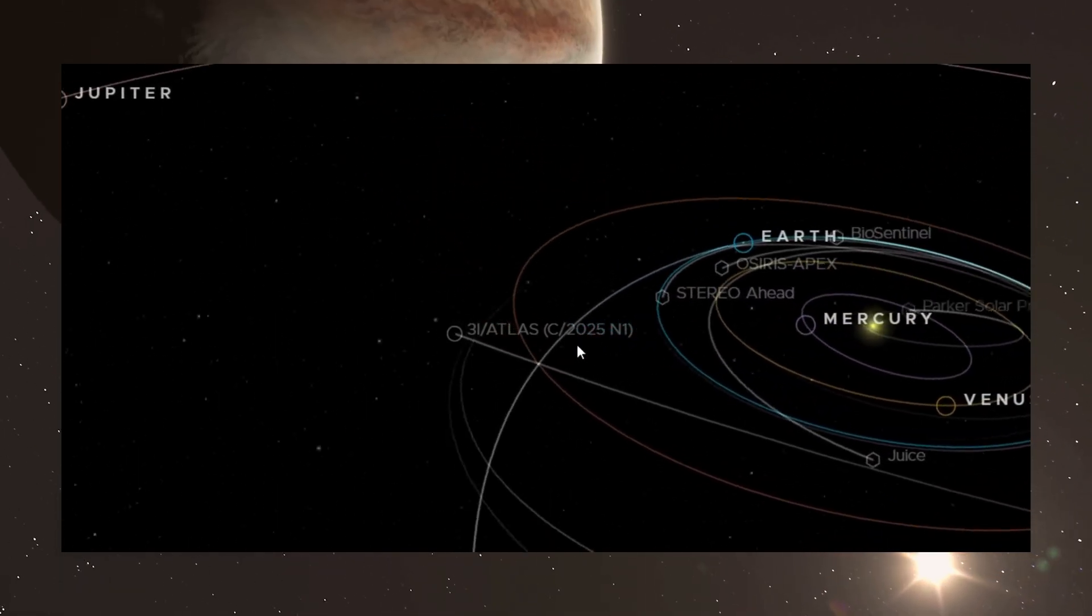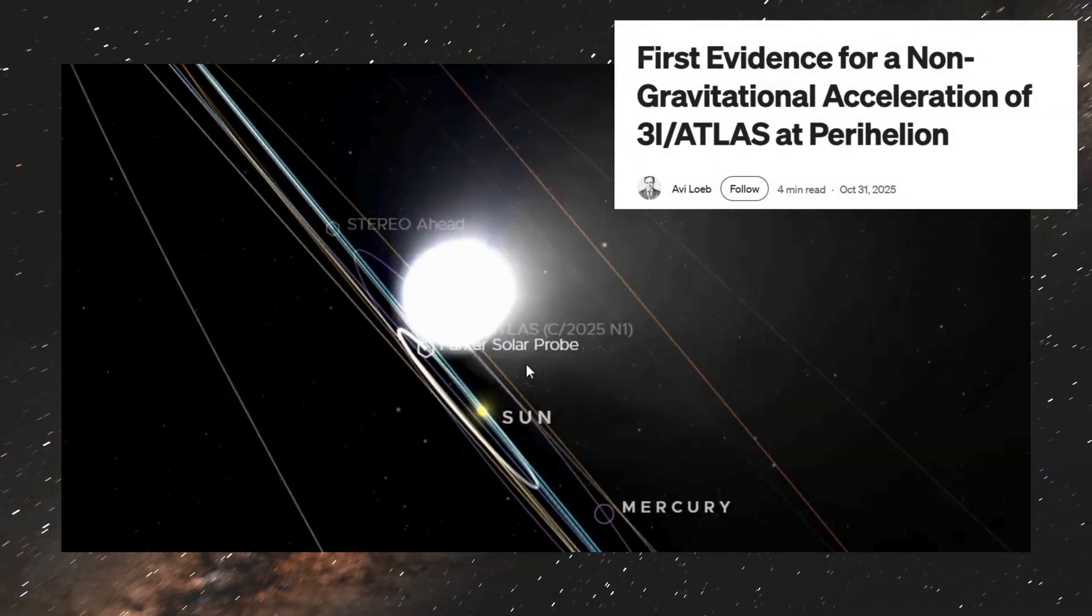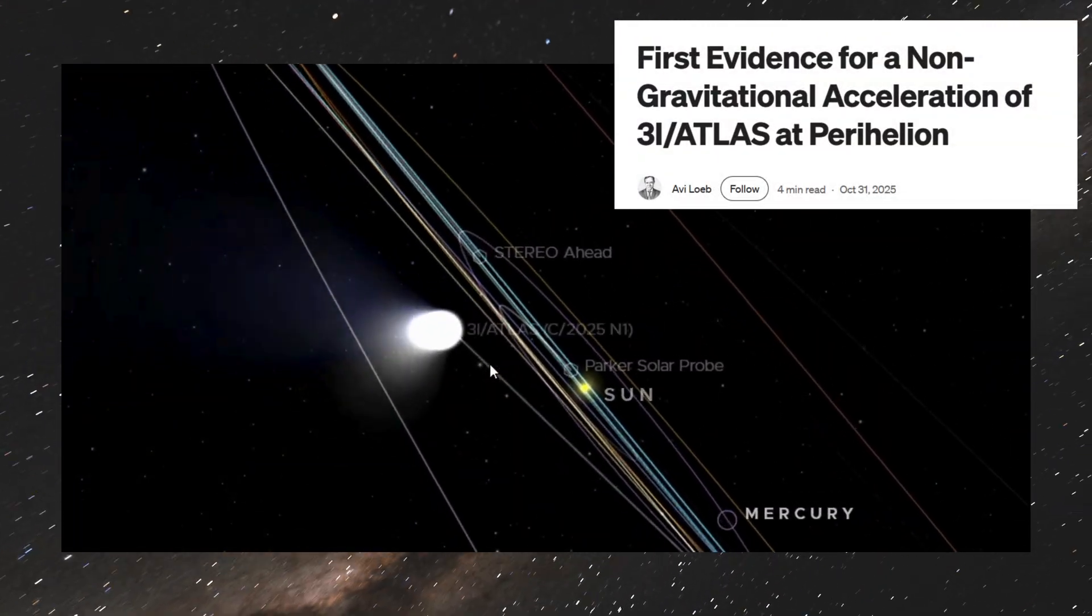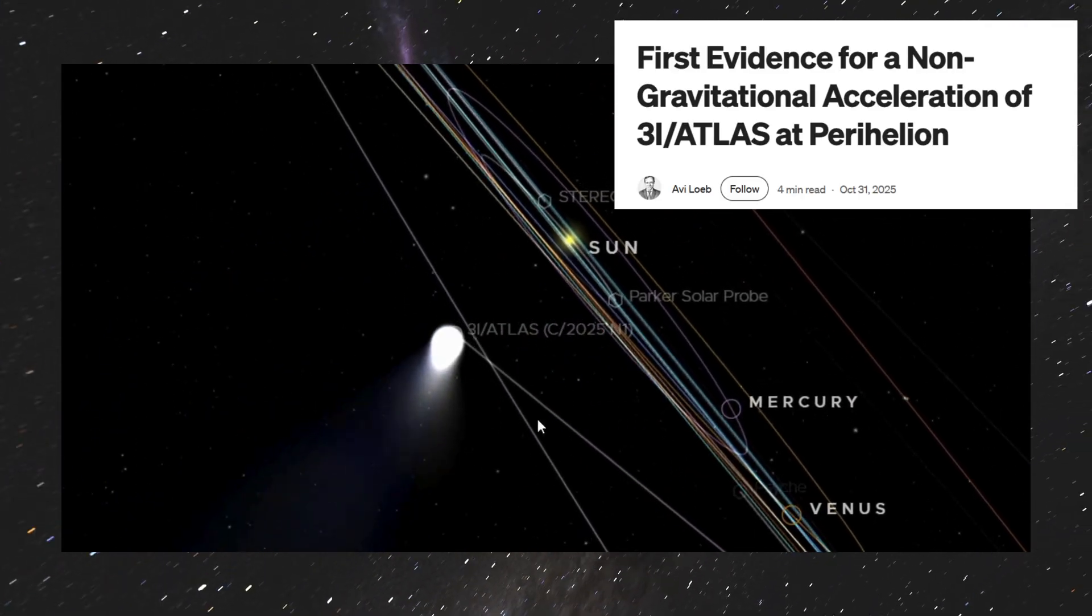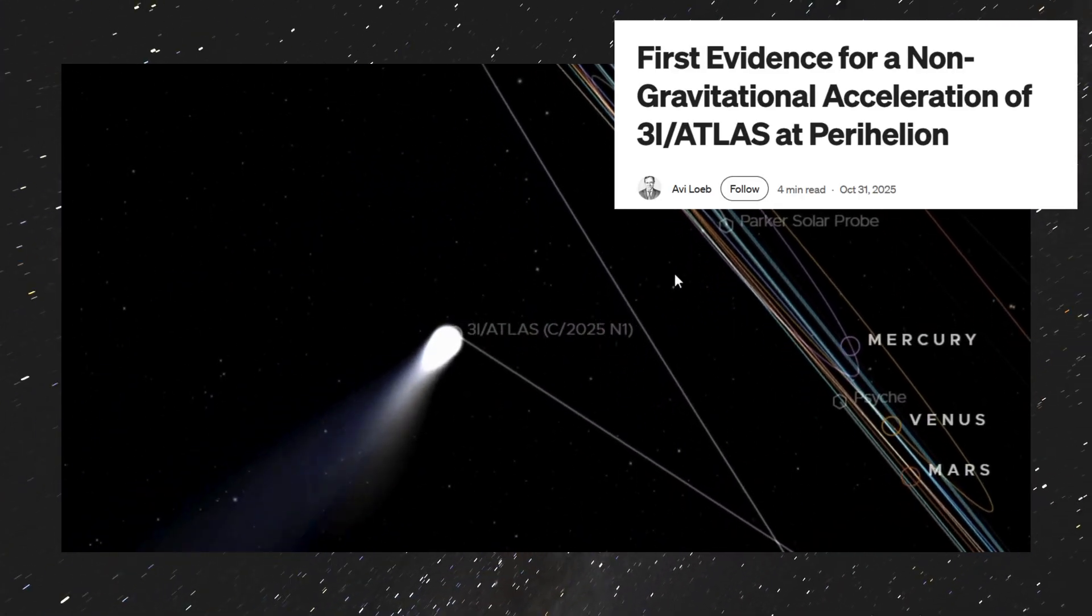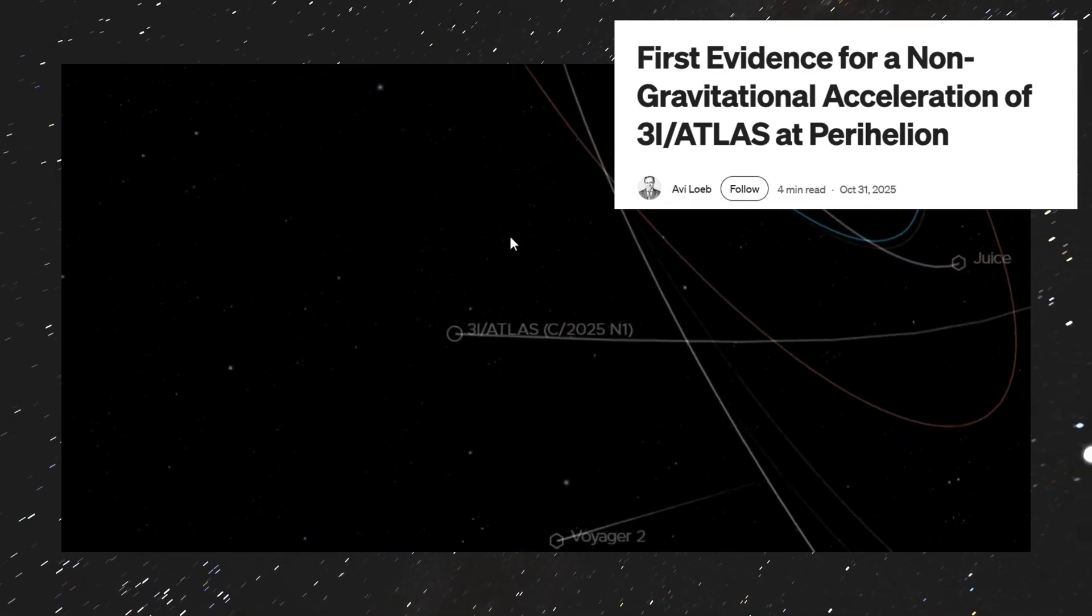This is where things go from strange to absolutely mind-bending. You probably remember that earlier observations showed non-gravitational acceleration coming from 3i Atlas, meaning the comet wasn't moving strictly under the influence of gravity. Something else, something unknown, was exerting force on it, altering its trajectory.